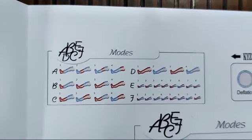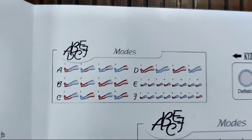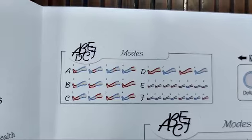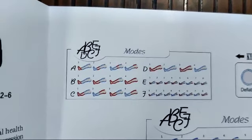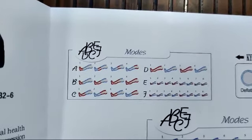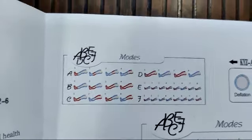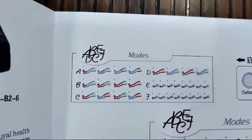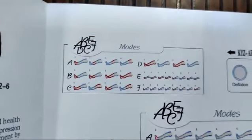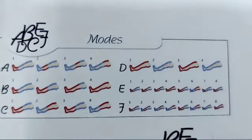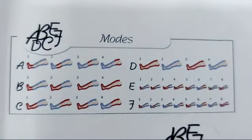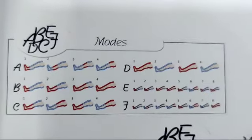These are the six modes: A, B, C, D, E, F. In mode A, chamber one inflates first, then chamber two, then chamber three, in a gentle sequential pattern. The other modes work differently, and the details can be seen in the manual.